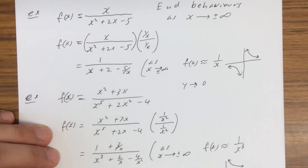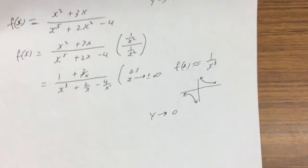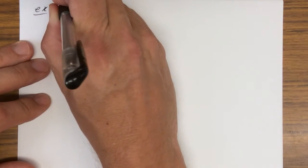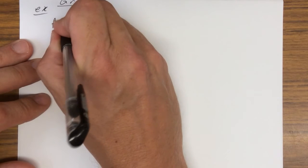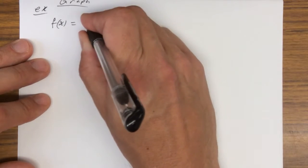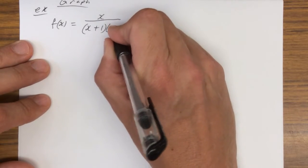If you want to graph a function, it's easier to look at the factored form. So let's put up an example here — we're going to graph f(x) equals x over (x plus 1) times (x minus 2).